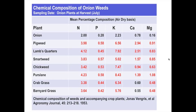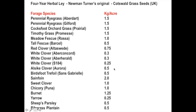Here's the four-year herbal lay — Newman Turner's original mixture from Cotswold Seed. It includes ryegrass, orchardgrass, timothy, and fescue grasses, plus red clover, white clover, alsike clover, birdsfoot trefoil, sainfoin, sweet clover, chicory, burnet, yarrow, sheep's parsley, and plantain. That's the mixture that goes into the pasture.